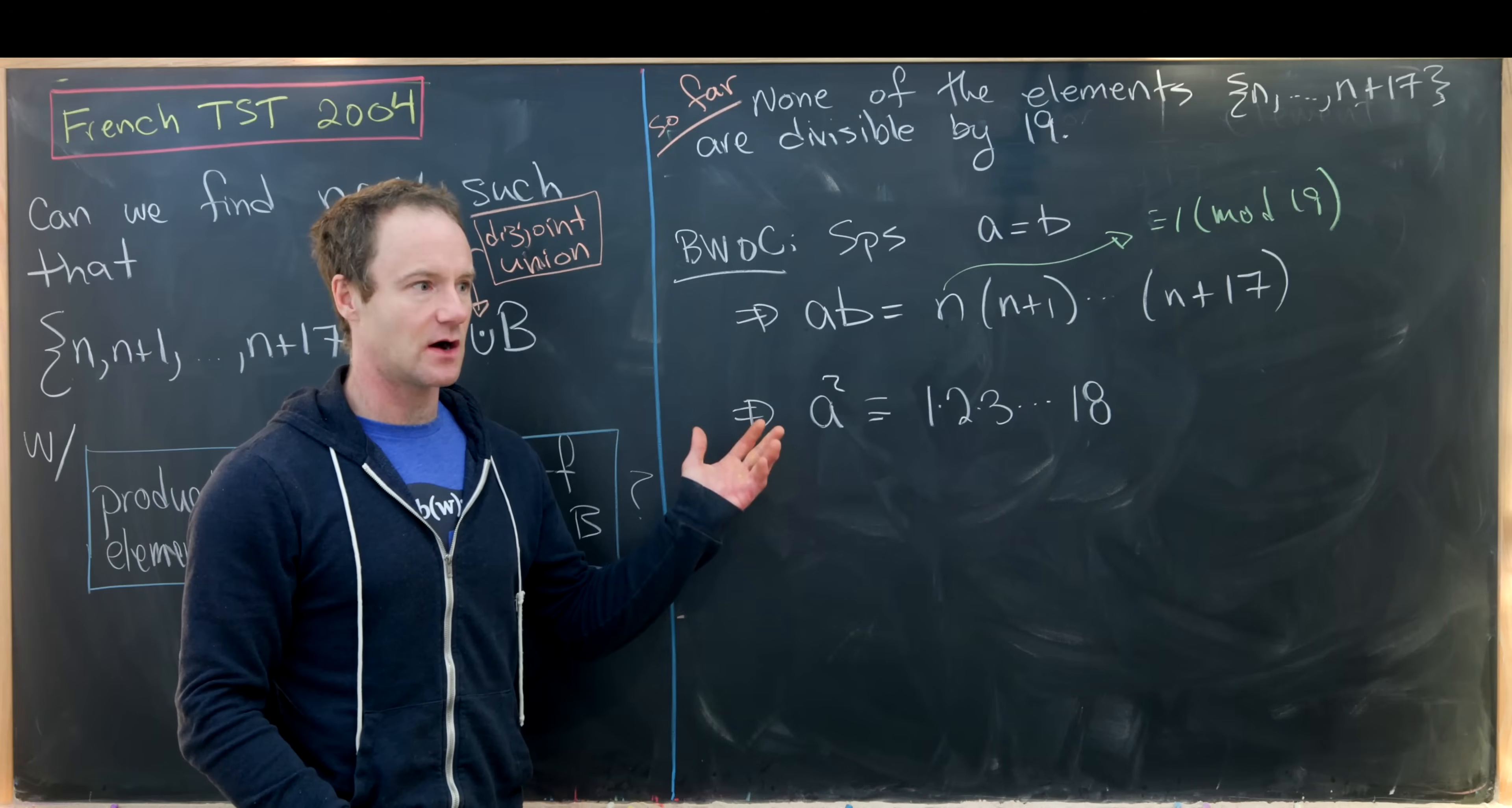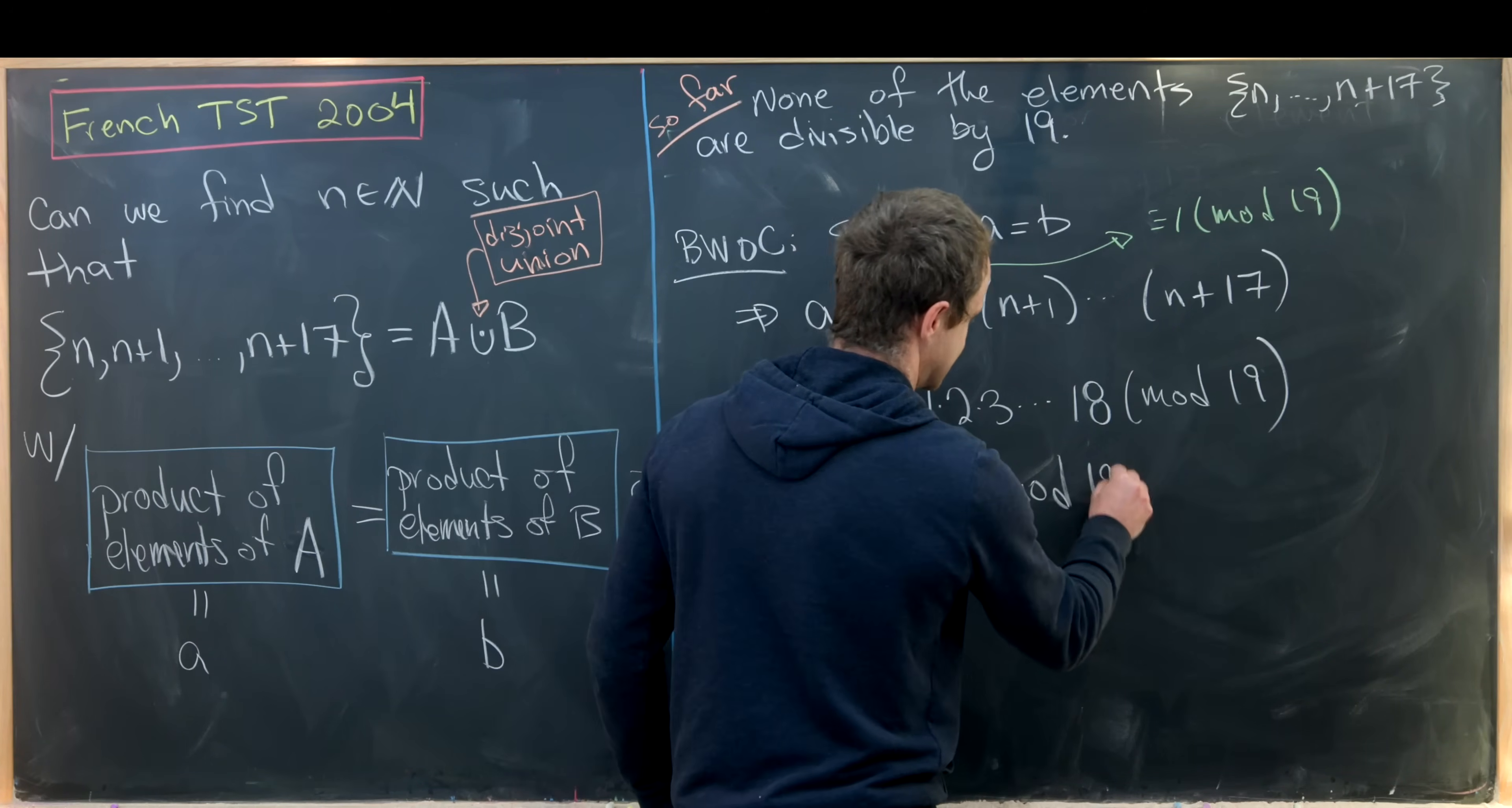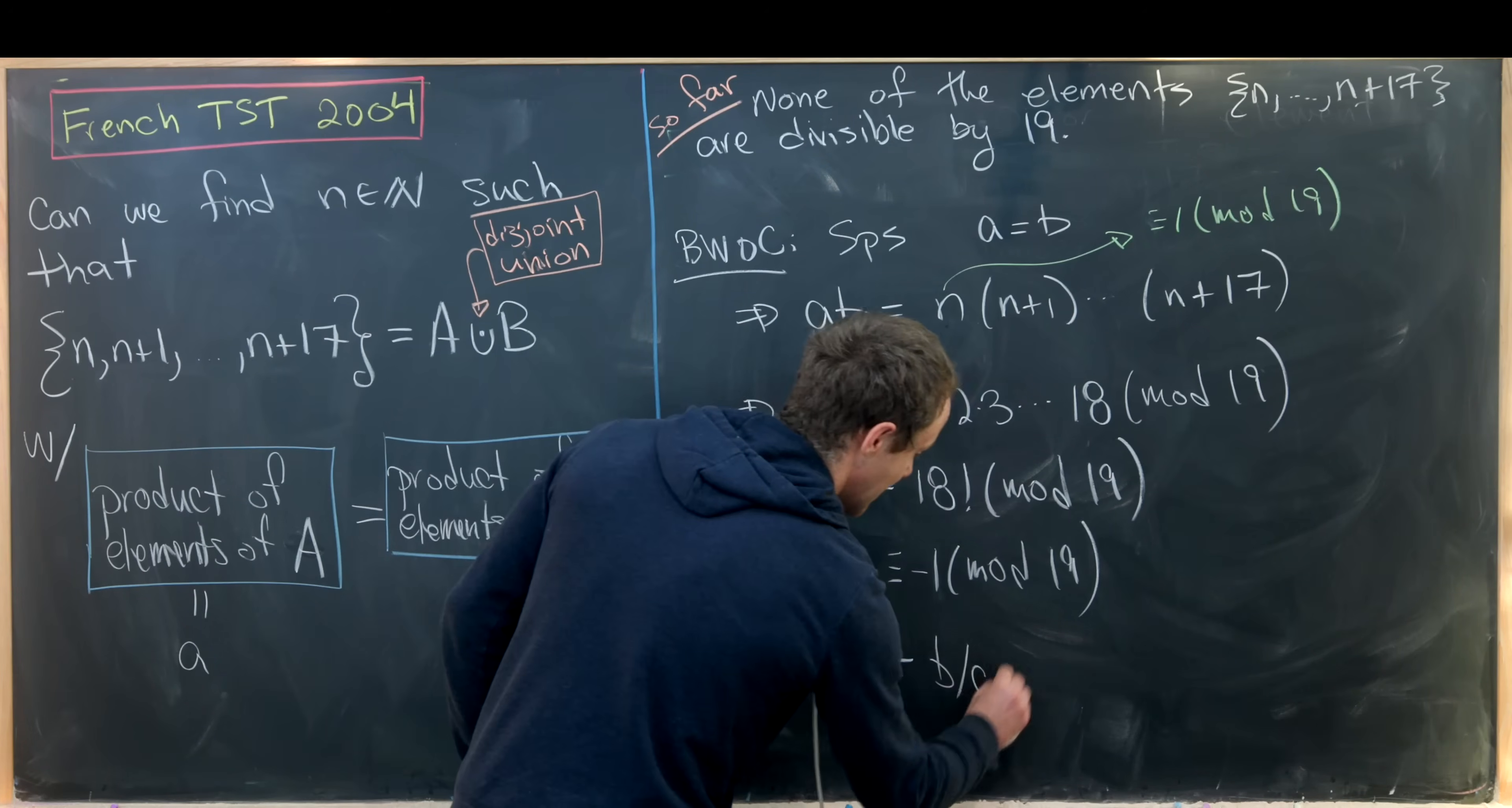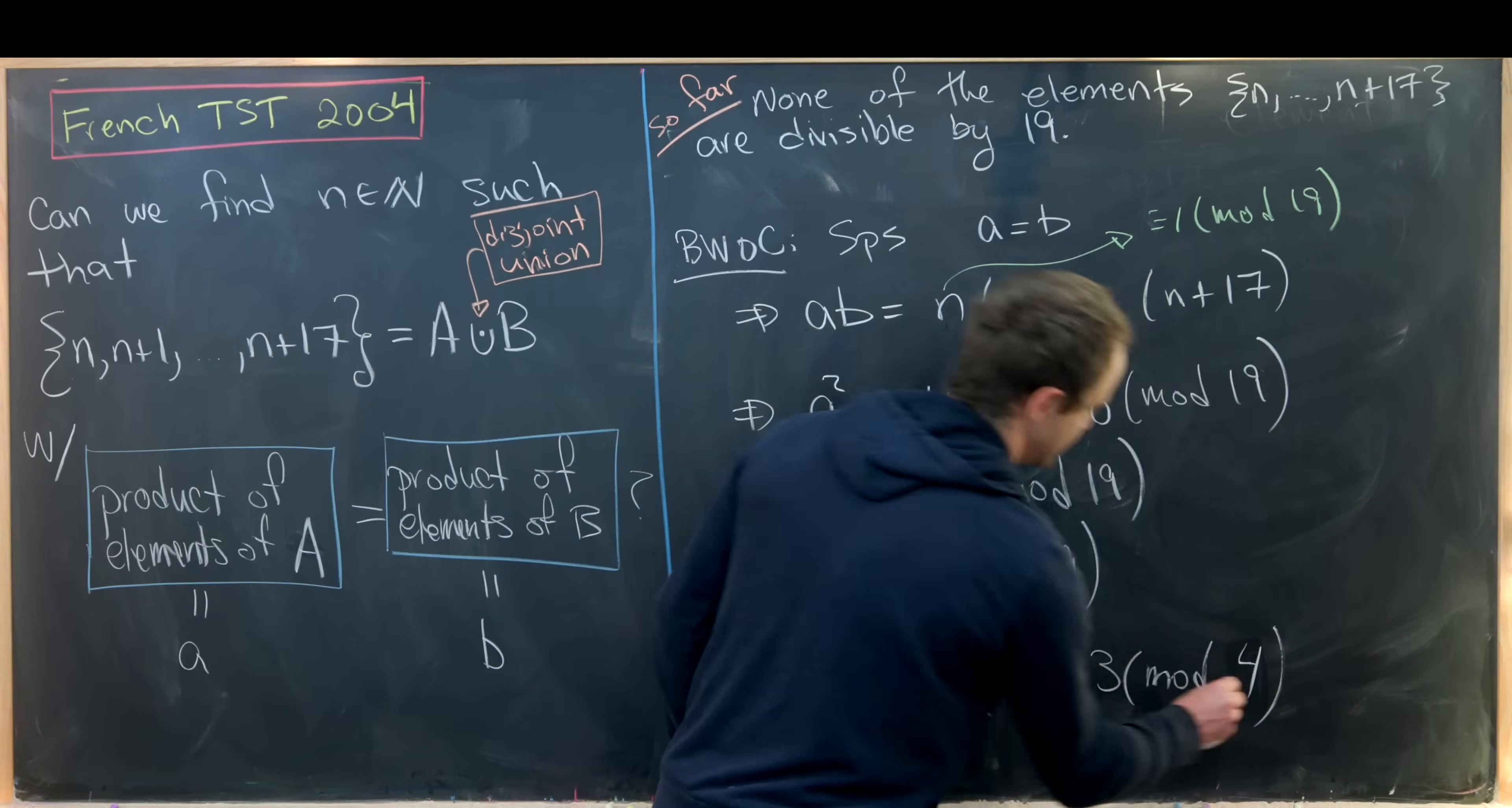Well, notice that the only possibility is that n is congruent to 1 mod 19. And that's because if n is congruent to anything else mod 19, then one of these will be a multiple of 19, which we showed was impossible already. But now we can rewrite this, just keeping in mind that we're working mod 19, as 18! modulo 19. But then by Wilson's theorem, that's -1 mod 19. But look, we've shown that -1 is a perfect square mod 19, but that's a contradiction because 19 is congruent to 3 mod 4. And by our previous fact, we know that -1 is not a perfect square mod p if p is congruent to 3 mod 4.